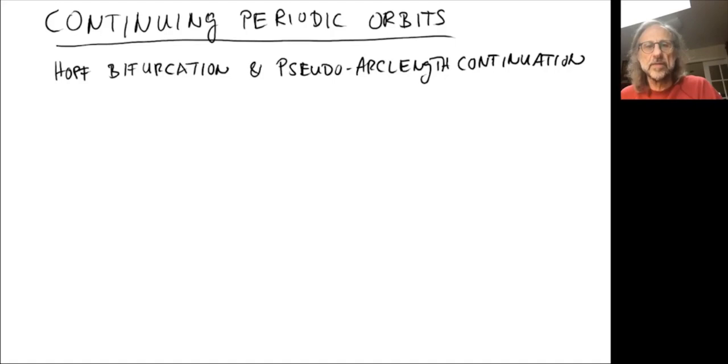We know now how periodic solutions can arise in a bifurcation, in a Hopf bifurcation, which is when a complex pair of eigenvalues crosses the imaginary axis.